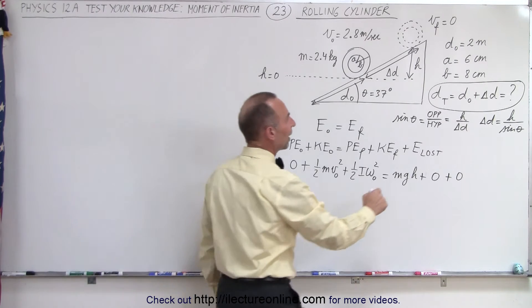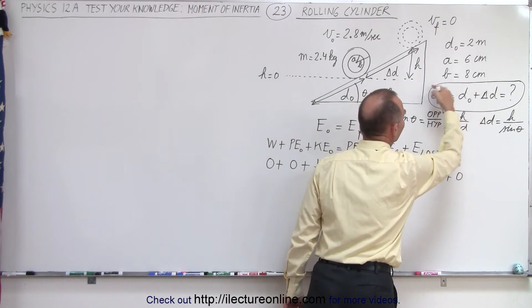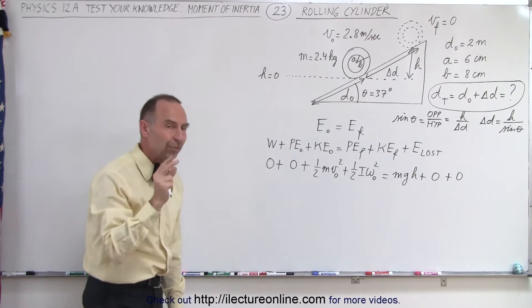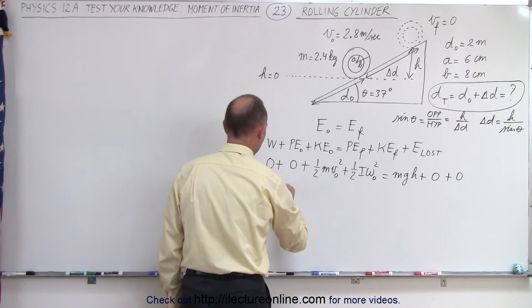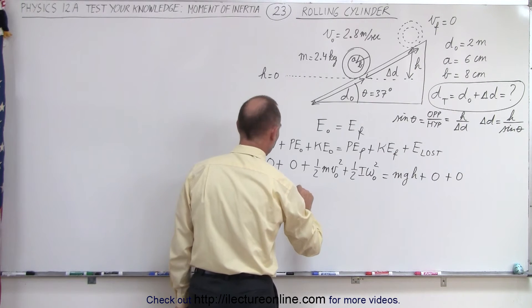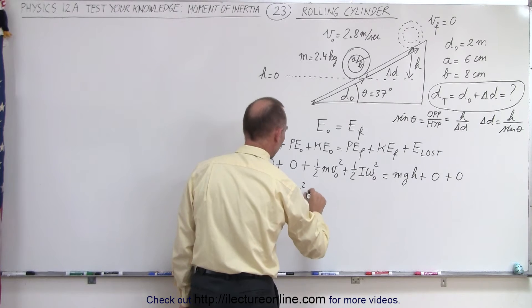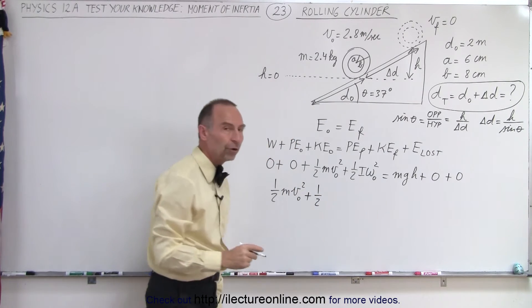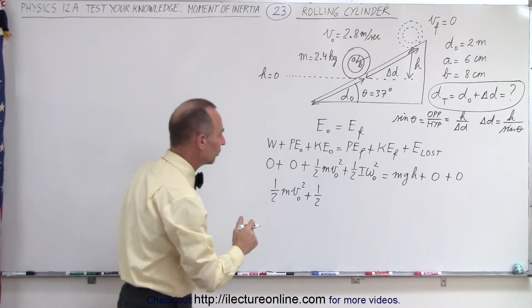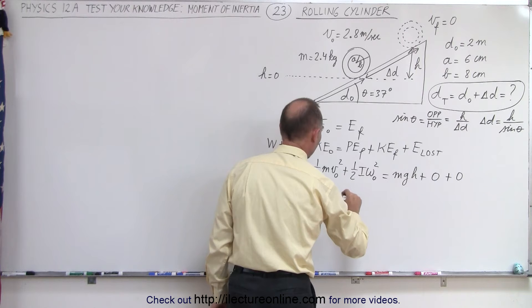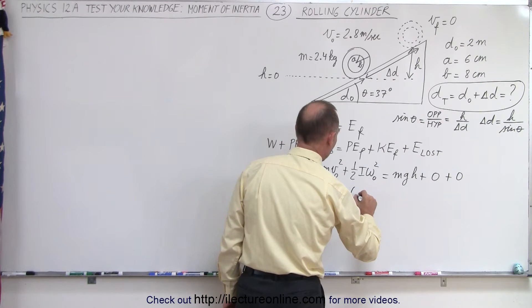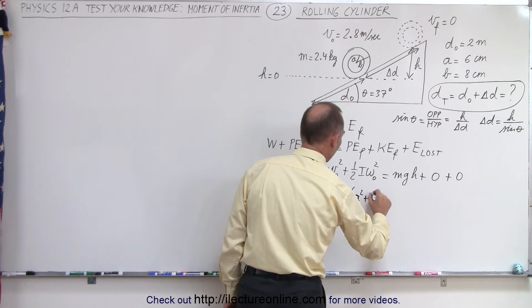And what are we trying to find? We're trying to find delta d, so we can find the total distance traveled up the incline. Let's plug in what we know, what these are equal to. So we have one-half the mass times v initial squared, those are known quantities, plus one-half times the moment of inertia of the cylinder with a thick wall. We have an outer and an inner radius,